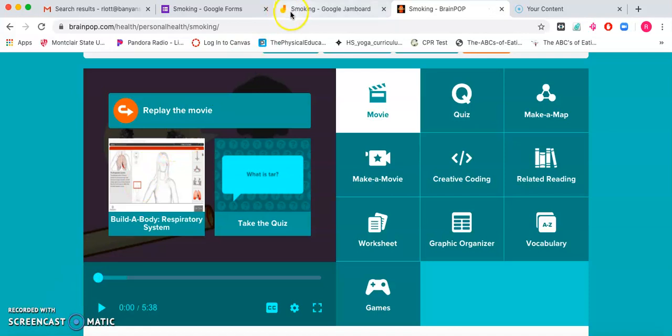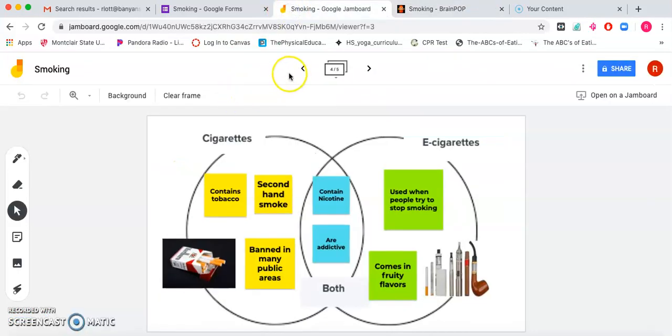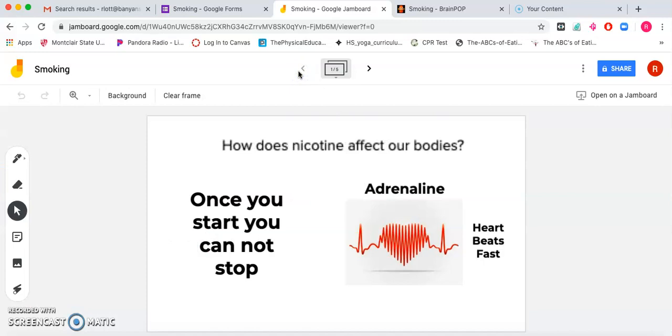Alright, so now we're going to go over here. So how does nicotine affect our bodies? As you can see, once you start, you cannot stop. It's very tough to stop smoking. And then nicotine gives you a faster heartbeat, and that is what adrenaline is. So you might get adrenaline from playing in a basketball game. You know, it brings your heart rate faster. So smoking does the same thing because of the nicotine.